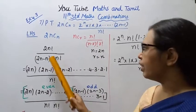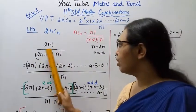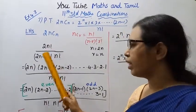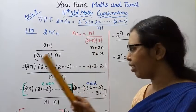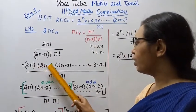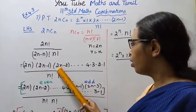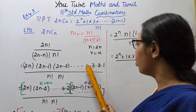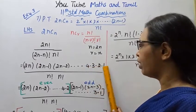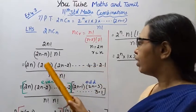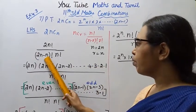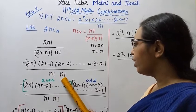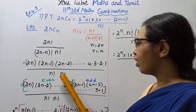Now, how do we expand 2n factorial? We write it as: 2n into (2n minus 1) into (2n minus 2) ... down to 4, 3, 2, 1. This is divided by (2n minus n), which gives n factorial, and then by n factorial.